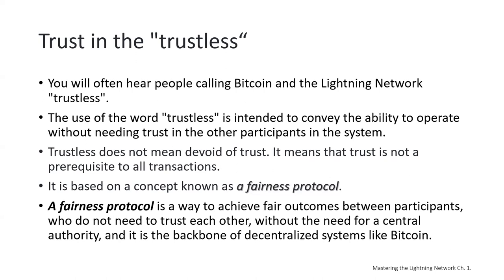Before we get into how the Lightning Network works, it's important to understand one basic concept that underlies both Bitcoin and Lightning: something we call a fairness protocol. A fairness protocol is a way to achieve fair outcomes between participants who do not need to trust each other, without the need for a central authority, and it is the backbone of decentralized systems like Bitcoin.